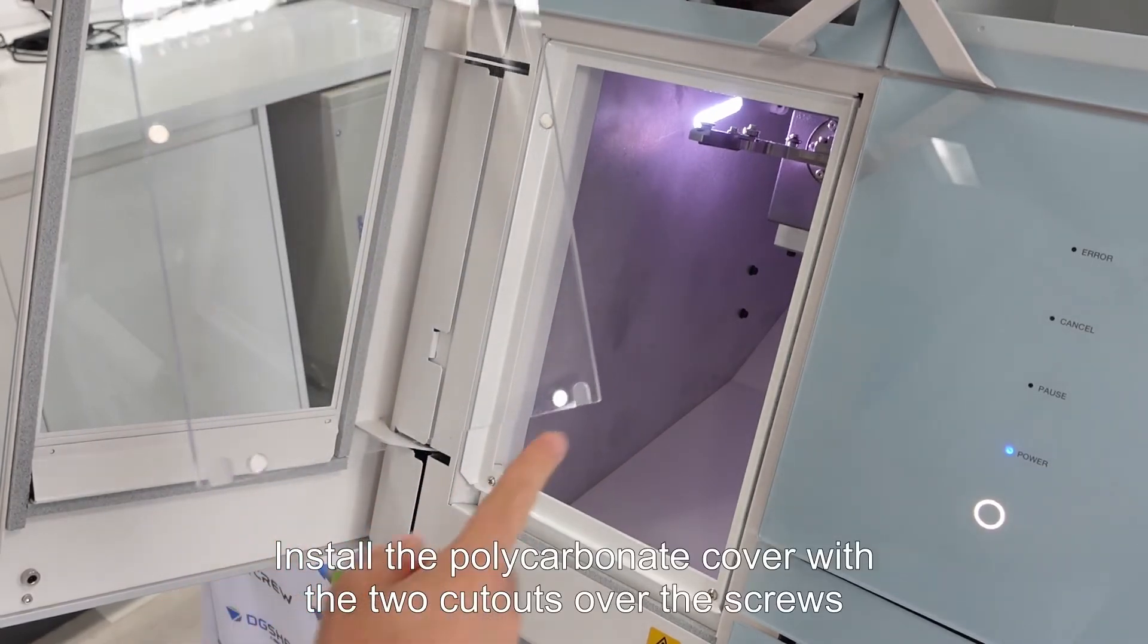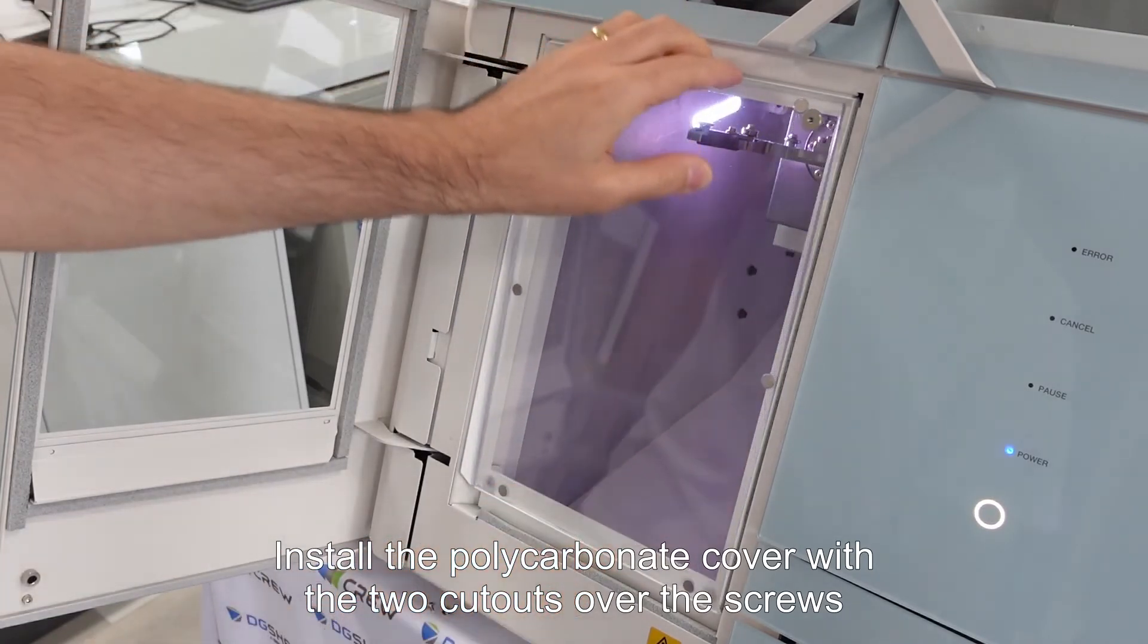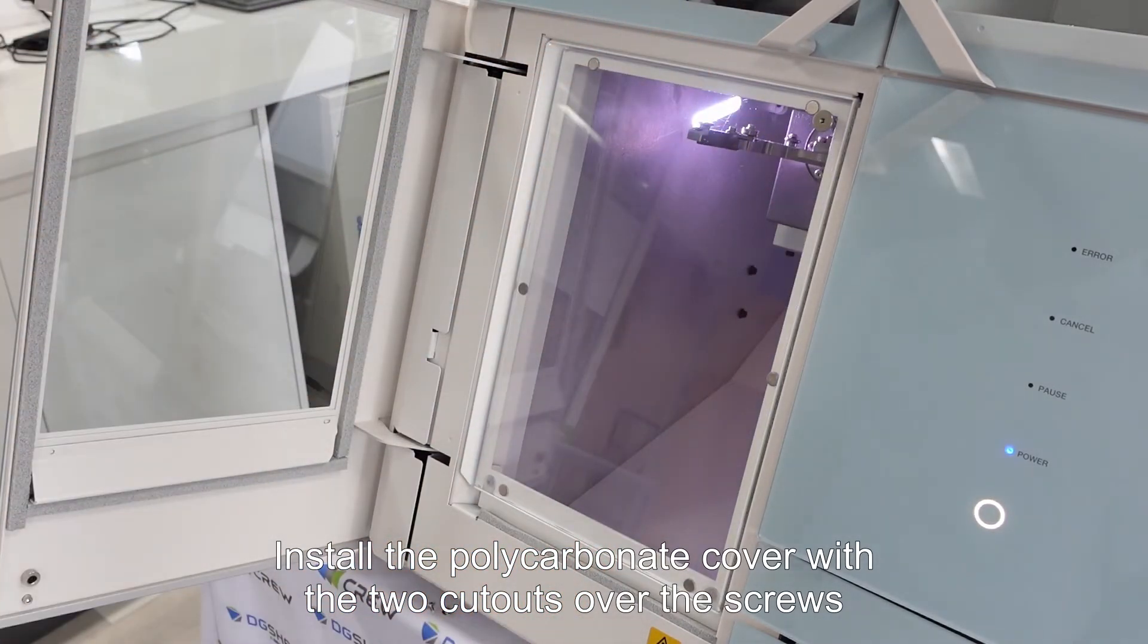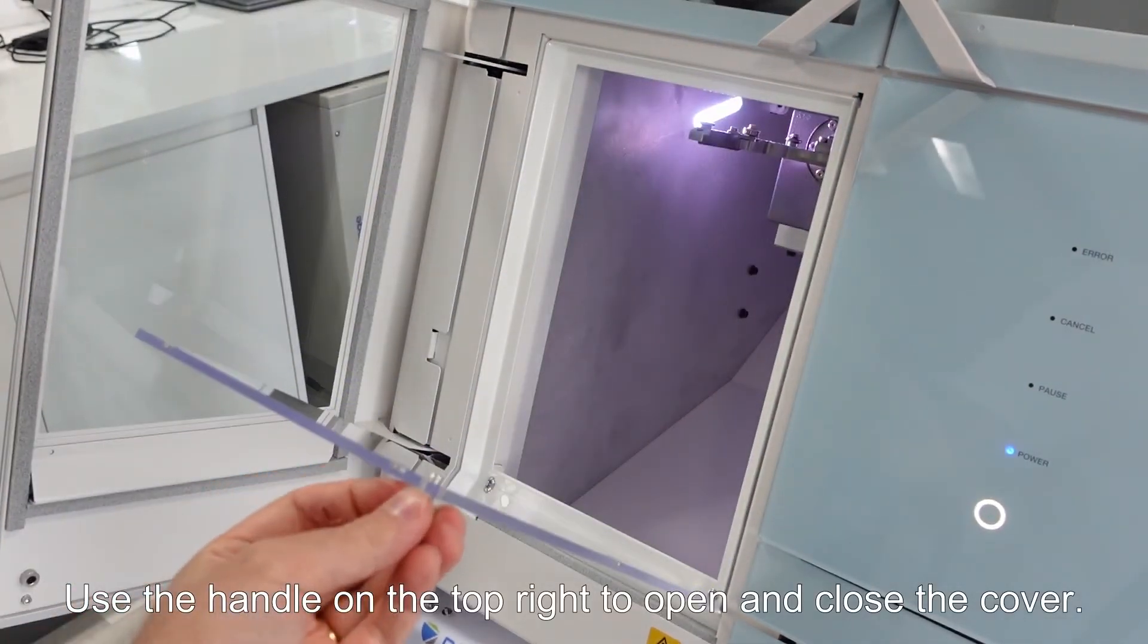Install the polycarbonate cover with the two cutouts over the screws. Use the handle on the top right to open and close the cover.